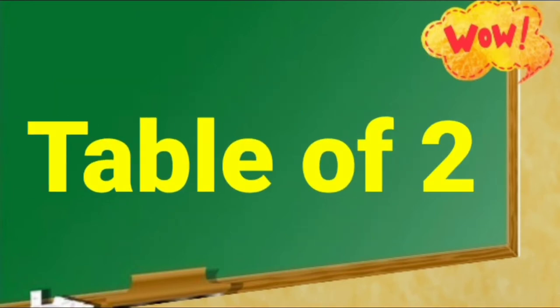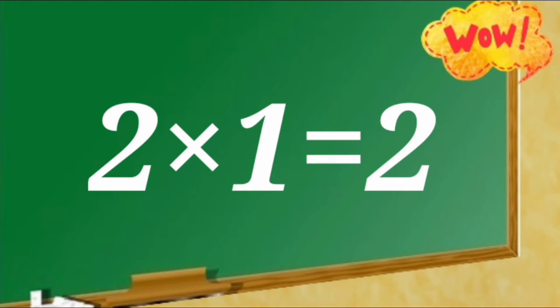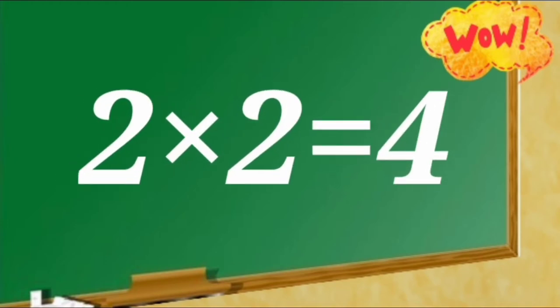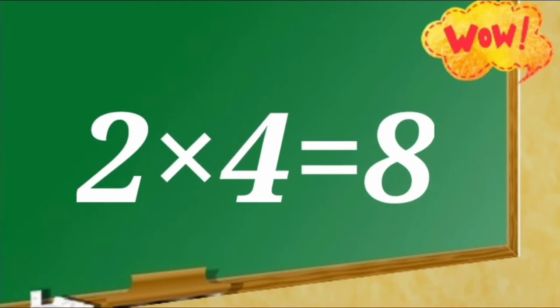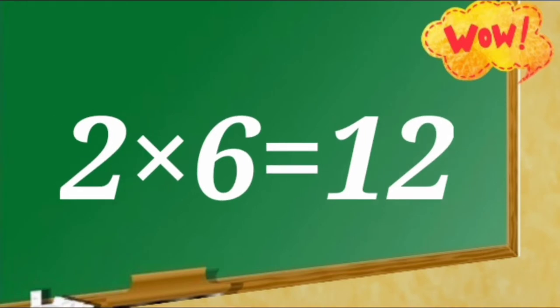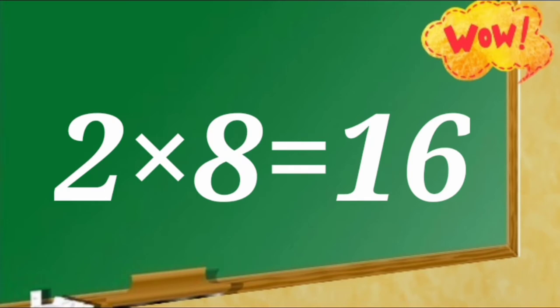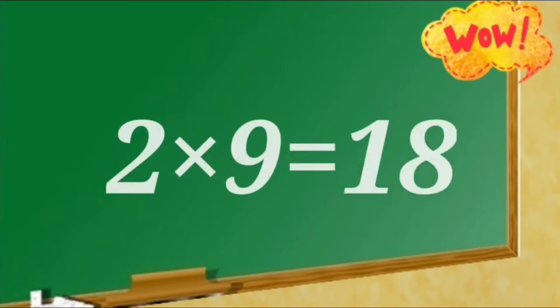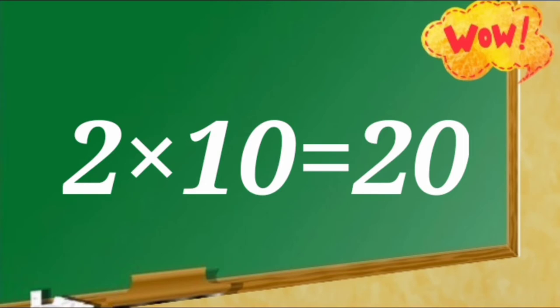Table of 2. 2 ones are 2, 2 twos are 4, 2 threes are 6, 2 fours are 8, 2 fives are 10, 2 sixes are 12, 2 sevens are 14, 2 eights are 16, 2 nines are 18, 2 tens are 20.